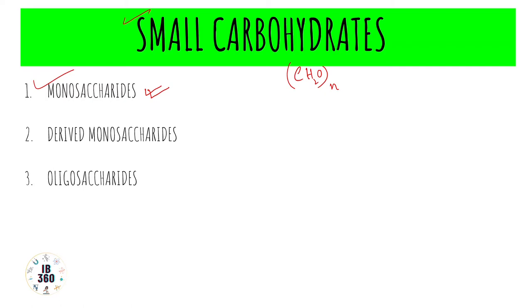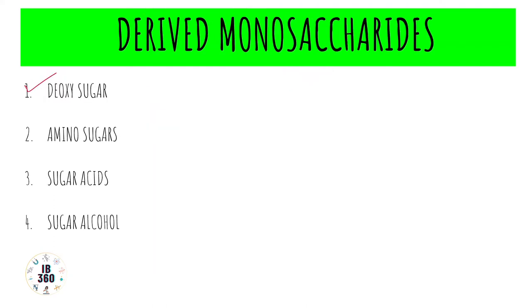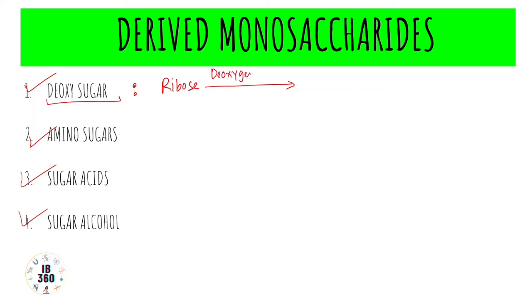Monosaccharides can be modified variously to form a number of different substances. The important derivatives are deoxy sugars, amino sugars, sugar acids, and sugar alcohols. For deoxy sugars, from the name itself we can understand that a deoxygenation process is involved. Deoxygenation of ribose produces deoxyribose.